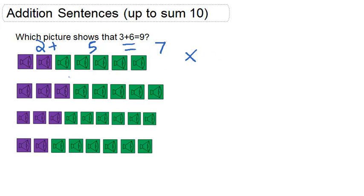Let's take a look at the next option. 3 purple speakers plus 1, 2, 3, 4, 5 green speakers equals 8.